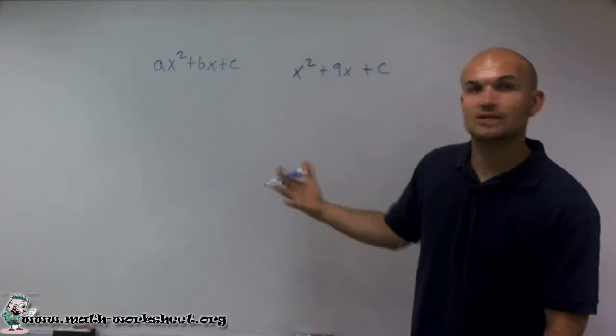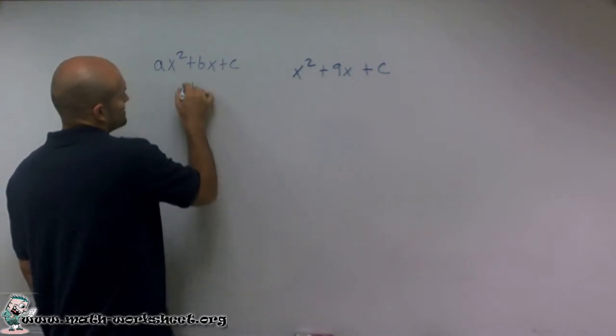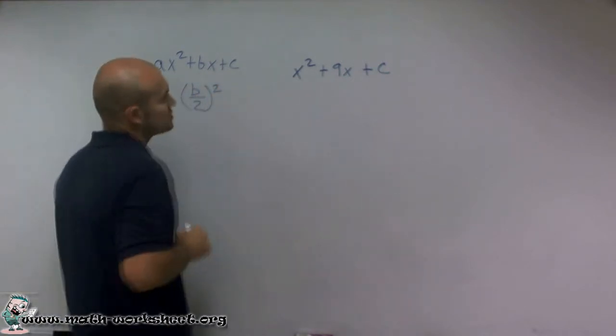The next thing we're going to do when completing the square is we take a look at our b, we divide it by 2, and then we square it.